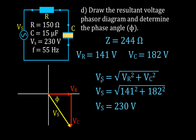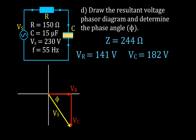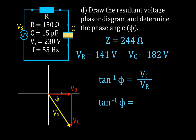To calculate phi, the angle between the voltage and the current, we use the tangent function since we know both the opposite and adjacent sides. The tangent is opposite over adjacent, so arctan(182 over 141) gives us phi equals 52 degrees. This is the angle by which the source voltage lags the current in this circuit. That completes everything we set out to do for this problem.